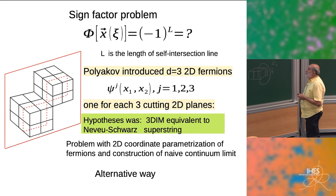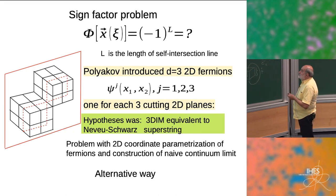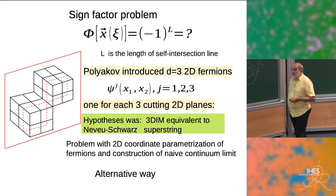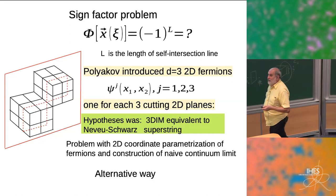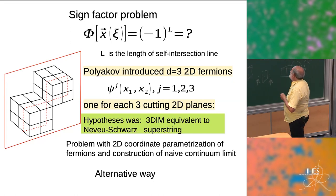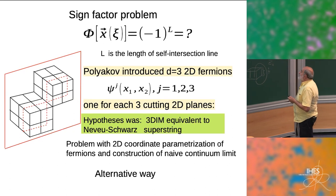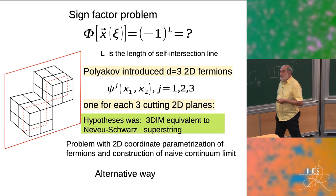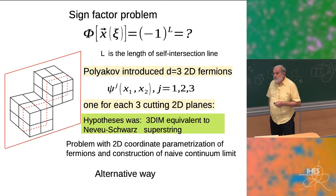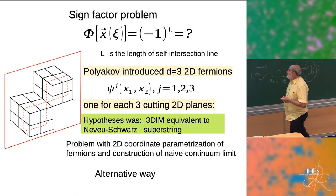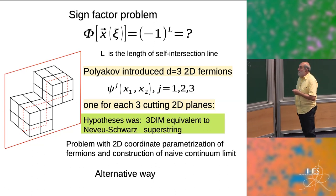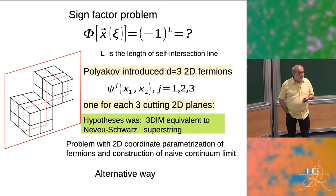Because you have three types of planes you can cut in 3D — this way, horizontal, another way — introducing for each plane some kind of Majorana fermions, you have in common three Majorana fields. You can imagine writing an action that produces the correct sign factor. That was the idea of Polyakov, who hypothesized that this setup — these degrees of freedom — appears in superstrings.